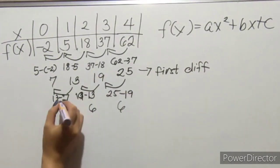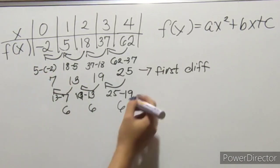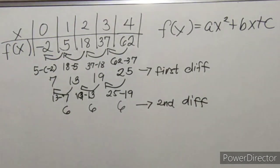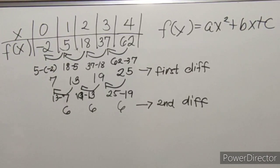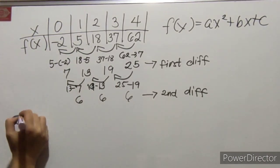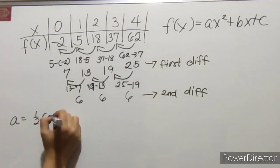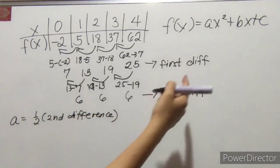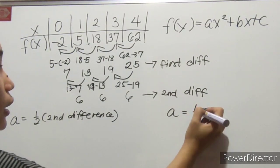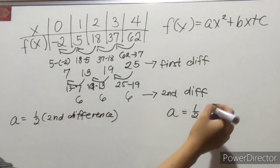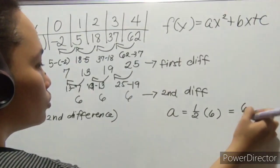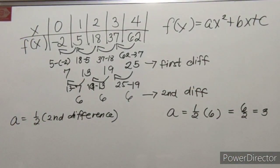So, definitely it will 6 and then it will also 6. This is our second difference. So, 1 half times 6 is 6 over 2, that will give us 3. So, that is our A.